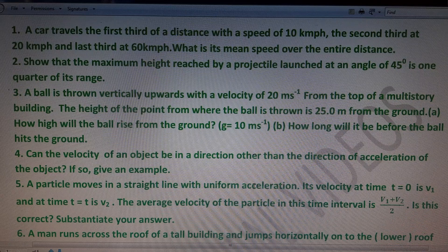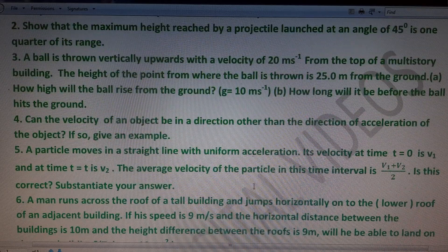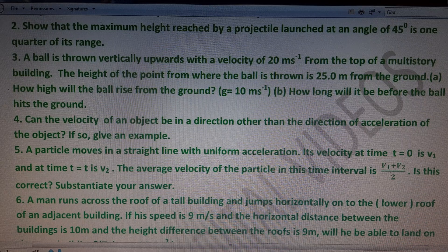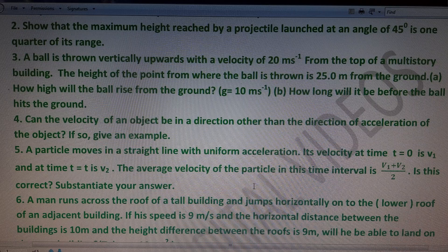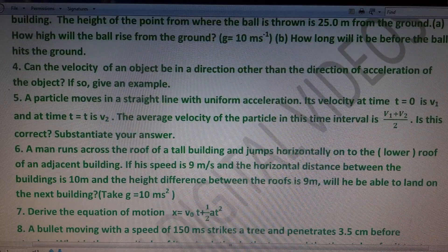Fourth question: can the velocity of an object be in a direction other than the direction of acceleration? If so, give an example. Fifth problem: a particle moves in a straight line with uniform acceleration; velocity at t=0 is v1 and at t is v2 — is the average velocity (v1 + v2)/2? Justify your answer.